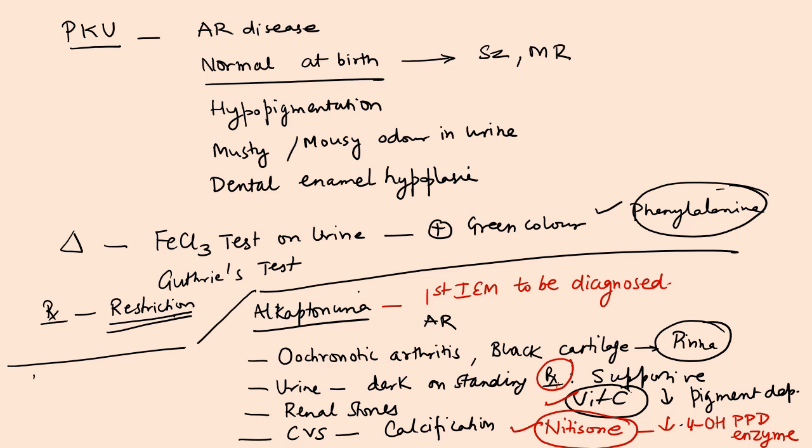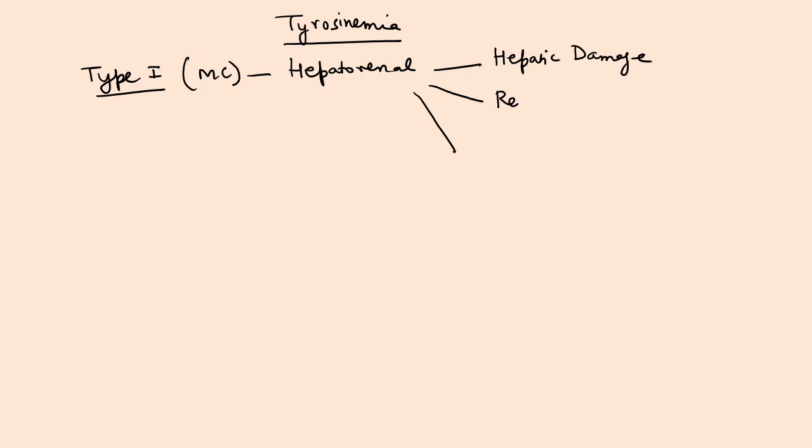These are the few points related to phenylketonuria and alkaptonuria for your entrance exam. Also some words regarding tyrosinemia. We have type 1 tyrosinemia, which is the most common form. It is also known as hepatorenal tyrosinemia.